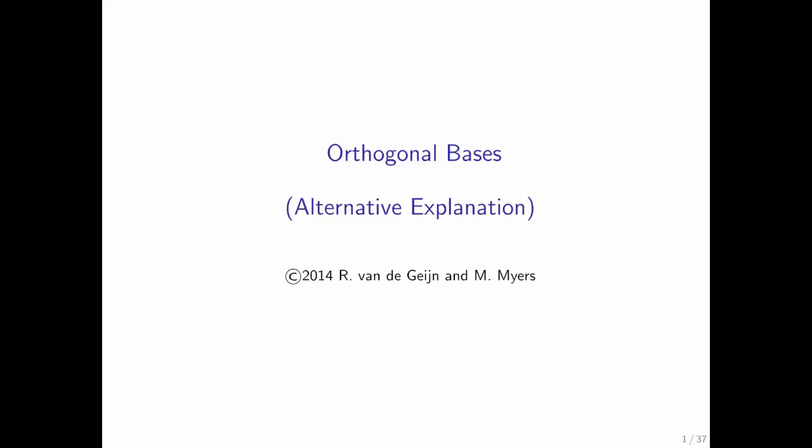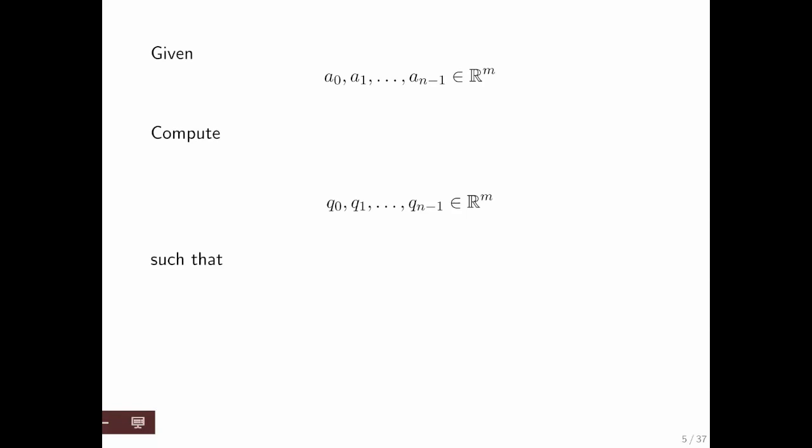We're now going to go through an alternative explanation of the Gram-Schmidt process, which will allow us to then link Gram-Schmidt orthogonalization to something called the QR factorization in the next unit. We're given n vectors a0 through an minus 1 in Rm. We want to compute q0 through qn minus 1 such that the span of a0 through an minus 1 is the same as the span of q0 through qn minus 1. So far, the problem is exactly as before.